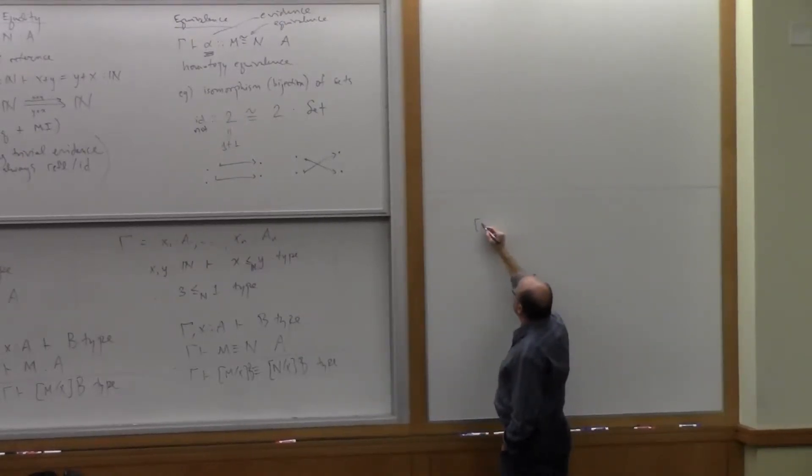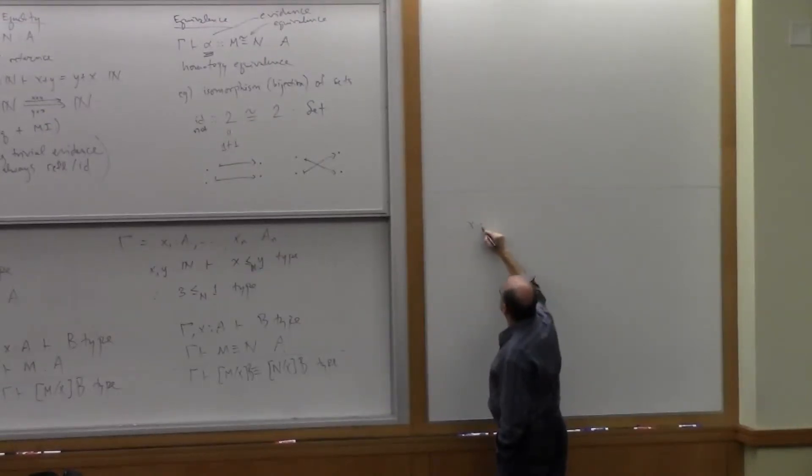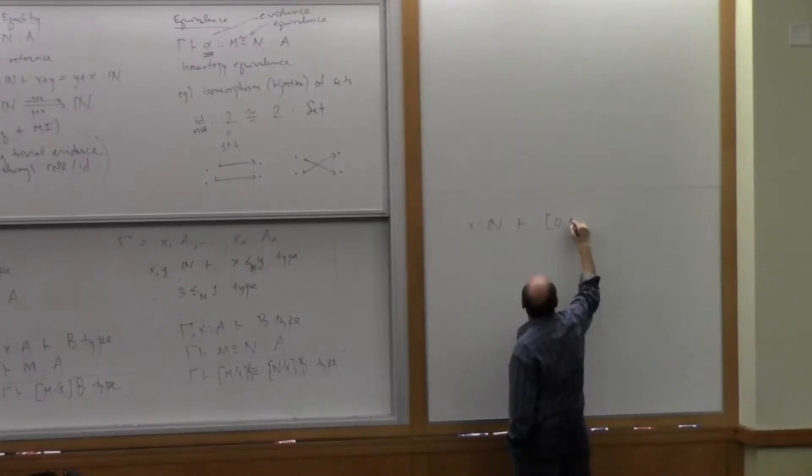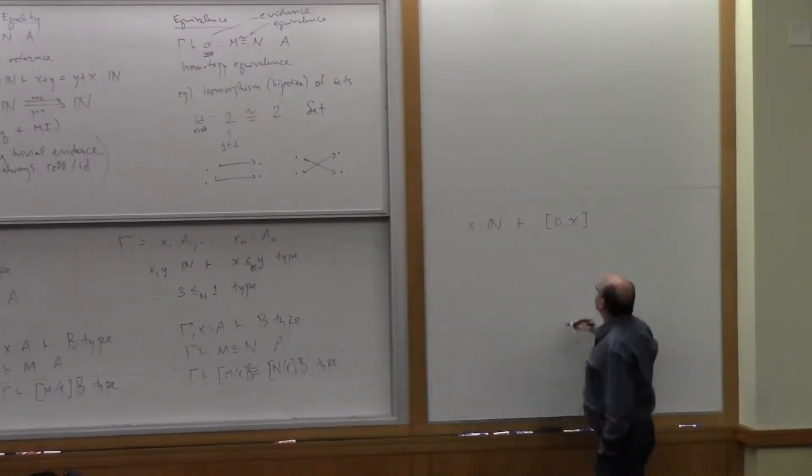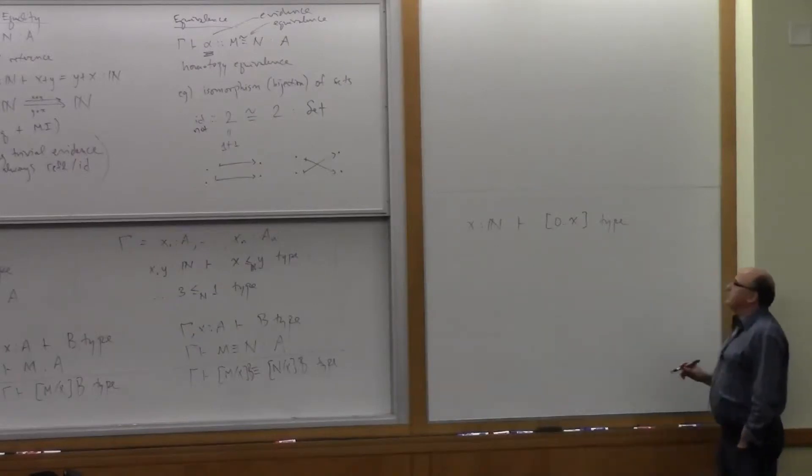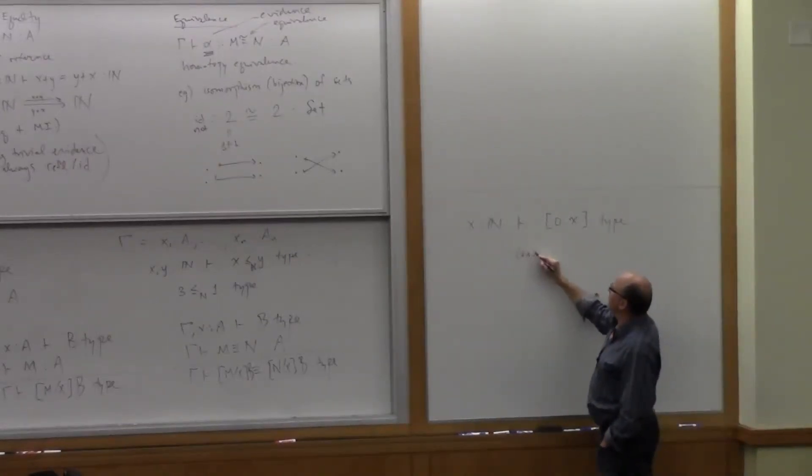But here's the idea. You can think of this as, some people, there are various ways to write it. We can say, let me leave myself some room. The idea is that we can look at the type maybe zero dot dot X is going to be a type. And that's supposed to be thought of as, the idea is it's supposed to be,